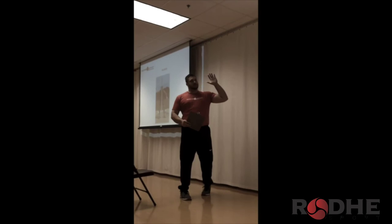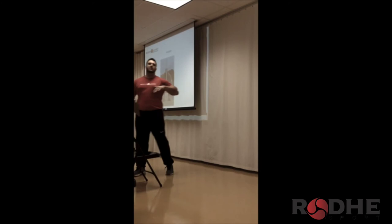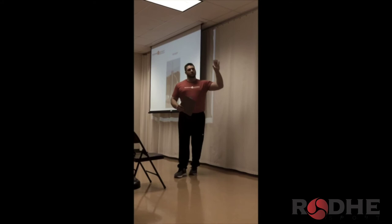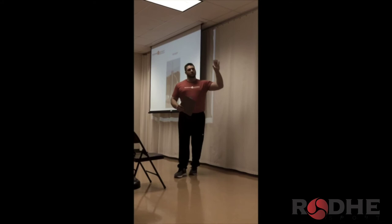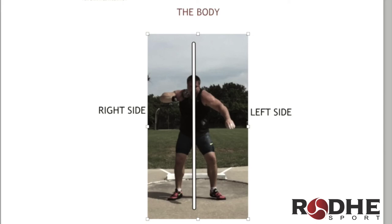So this first section is an attempt at that. We're going to talk about the body in the throw. Convention has had us use a lower body and an upper body, a bottom half and top half. I propose that we move to splitting the body down the center and only considering a left side and a right side. So when we approach the rotational throw, you have a left side and a right side that you're working with in terms of forces.